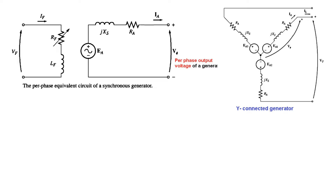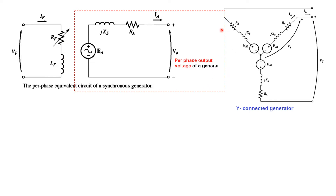The question states the generator is Y-connected. Generally we just take one phase and discuss that. This portion is the phase, and I've shown the field connection as well. The terminal voltage VT between line to line is called the terminal voltage, and the voltage across one phase is called the phase voltage.